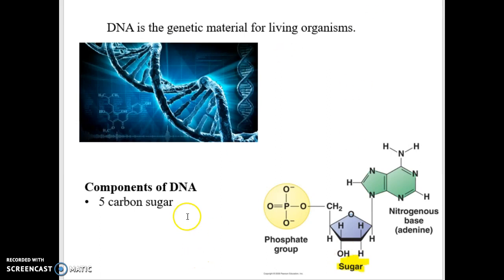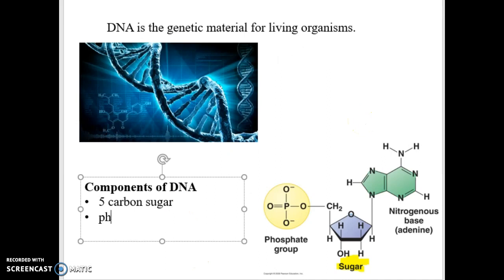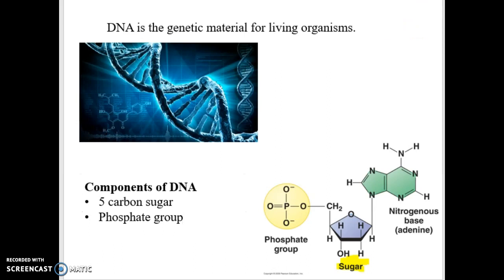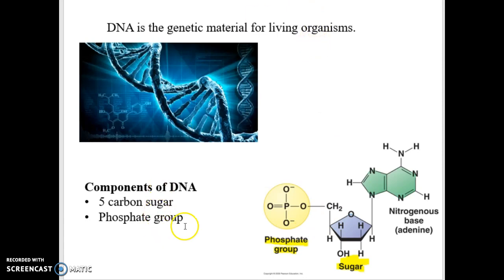The second component is a phosphate group — phosphorus, a phosphate group with four oxygens attached to it — and that structure is bonded to the sugar, connecting those two with a covalent bond.